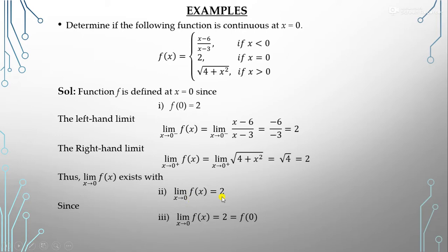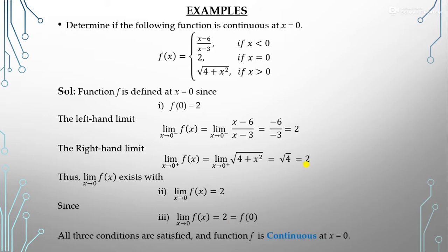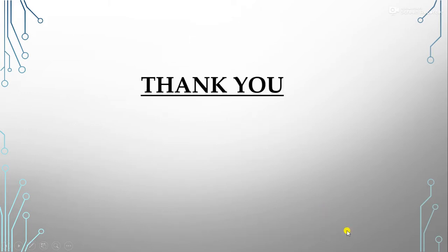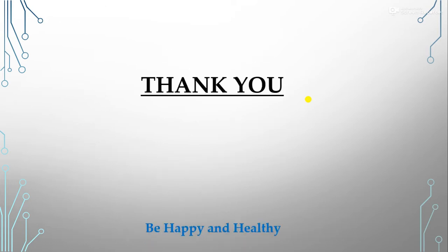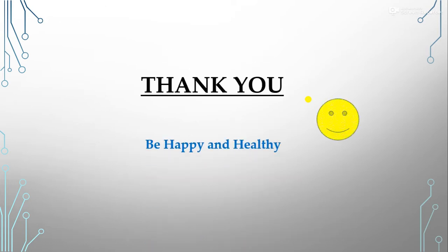The limit as x tends to 0 of f(x) is 2, and f(0) is also 2 — they are equal, so the third condition is also fulfilled. Therefore, the function is continuous at x = 0. I hope all of you are clear on how to find the continuity of a one-variable function. Try some more questions to practice. Today's lecture is completed — thank you, be happy, be healthy, and your syllabus is now complete.